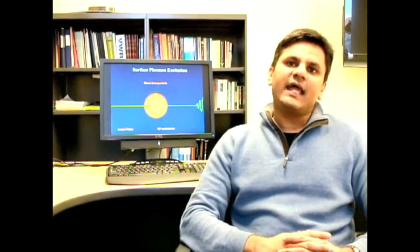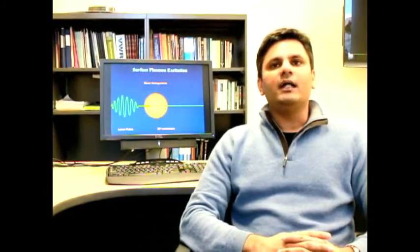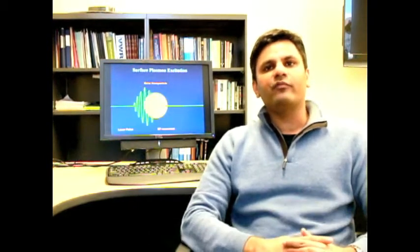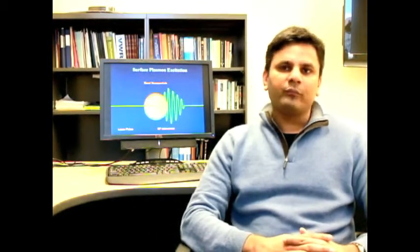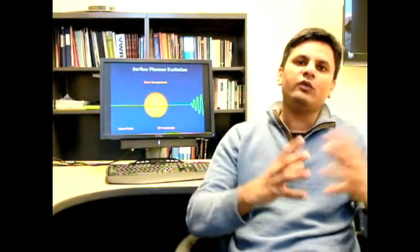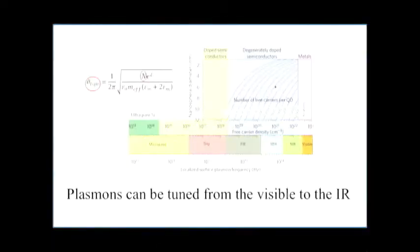The second exciting thing is it has allowed a very new level of tunability or control. When you can synthetically tune carrier concentrations — for instance in the case of semiconductors, these carrier concentrations can be varied over orders of magnitude — it allows you to engineer, using the same material, a plasmon resonance that can range from the mid-infrared region of the spectrum to the visible region of the spectrum. A very wide range of spectral tunability.